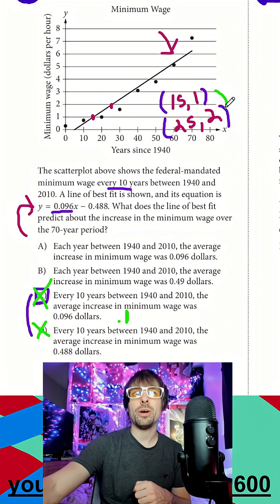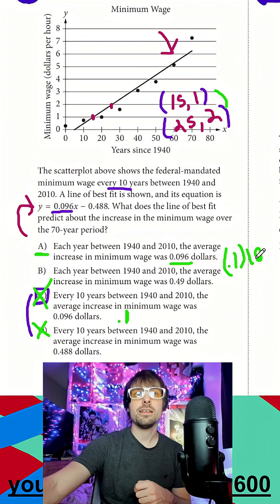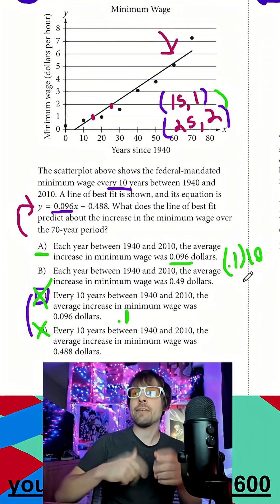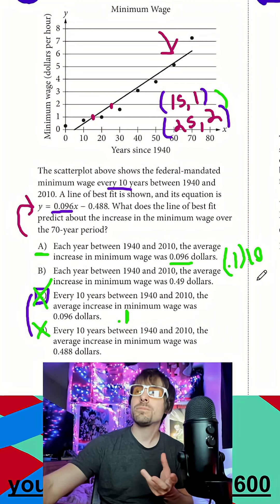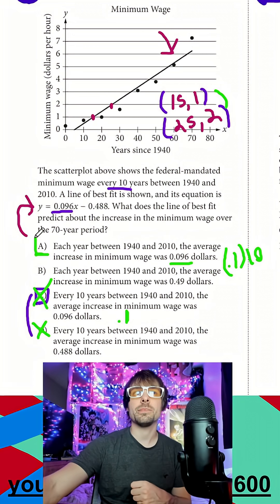We should be increasing about a dollar every 10 years. And if I look back up at A, if I multiply this, say that's again, round it up to 0.1, if I multiply that by 10, that would get us to our dollar every 10 years or 10 cents every one year. It looks like it's going to be A here.